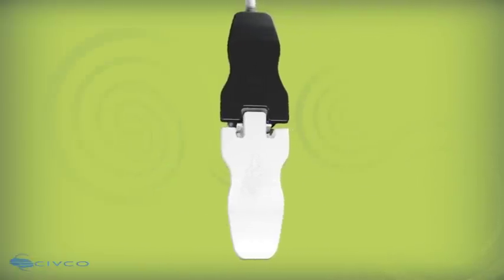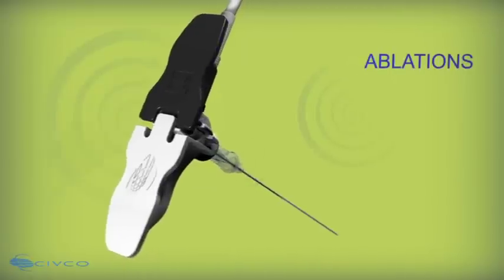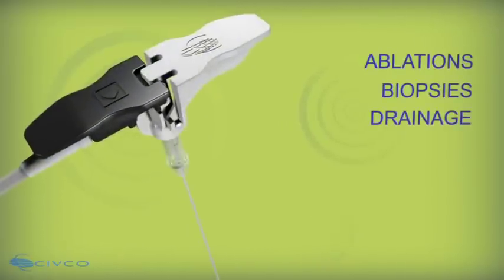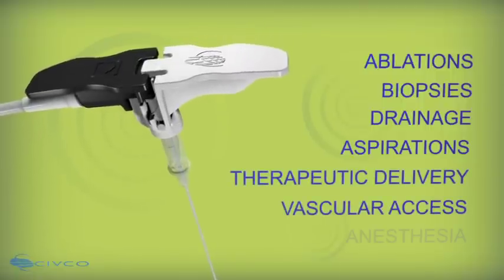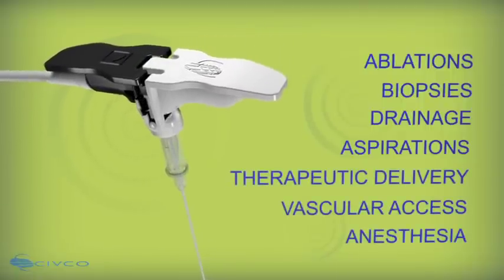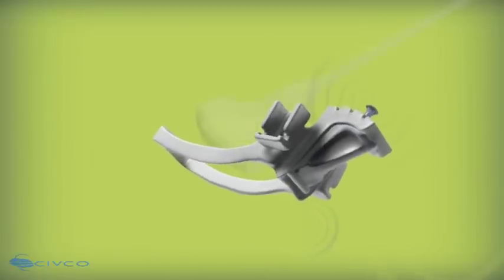Civco's electromagnetic tracking system may be used with devices for applications such as ablations, core tissue biopsies, drainage, fluid aspirations, therapeutic delivery, vascular access, and regional anesthesia. Assembling the Civco tracking bracket system together is easy.